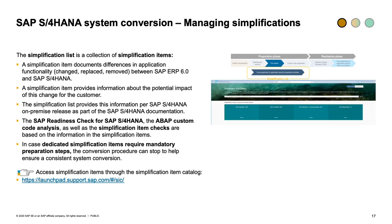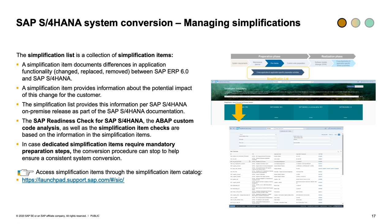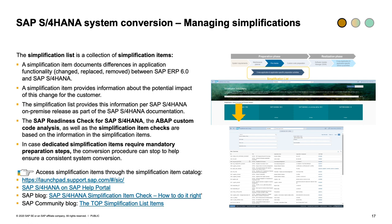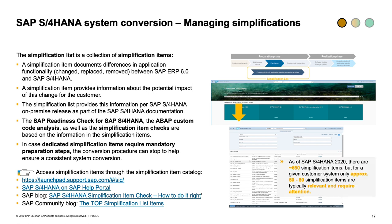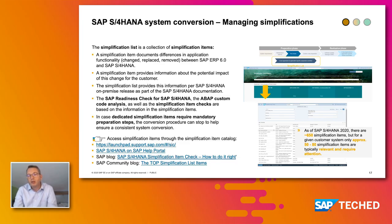Simplification items are available online in the simplification item catalog — a web application on the SAP Service and Support Launchpad — where you can select a release, apply filter criteria, and discover what each item means for your business. For the SAP S/4HANA 2020 release, there are roughly 630 to 640 simplification items total, but for most customer systems with a given application mix, only 50 to 90 are truly relevant and require attention. I recommend the SAP Blog 'S/4HANA Simplification Item Check — How to Do It Right' to learn how to use these items and act on the results.